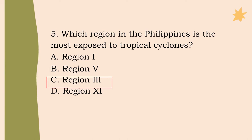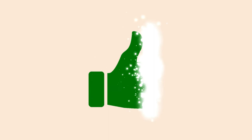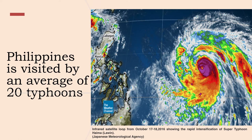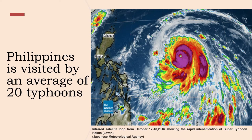Now let's go to the lesson proper. The Philippines has a tropical climate. Annually, the country is visited by an average of 20 typhoons, 5 to 9 of which are highly destructive. The Philippines is situated in the Pacific Typhoon Belt, and thus the country is highly prone to hydrometrological hazards.